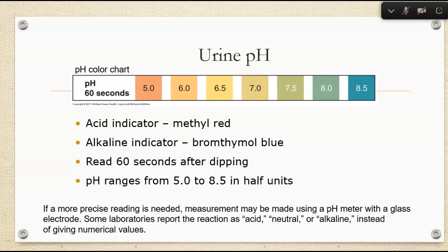Some manufacturers can change the read time, so don't memorize it — you always follow the instructions. The pH we're detecting in urine ranges from five to eight and a half, and we only report in half units. For more accurate measurement, we can use a pH meter with glass electrodes. Some places will actually just report urine as acidic, neutral, or alkaline instead of giving numerical values.